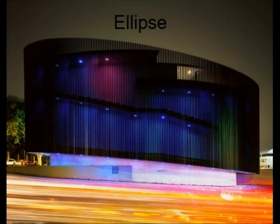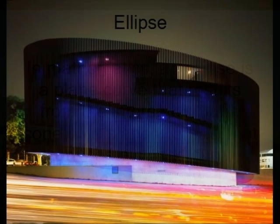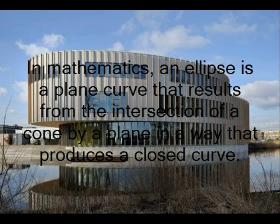Ellipse. In mathematics, an ellipse is a plane curve that results from the intersection of a cone by a plane in a way that produces a closed curve.